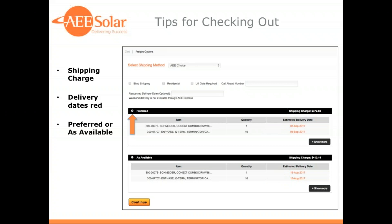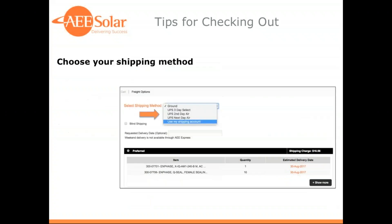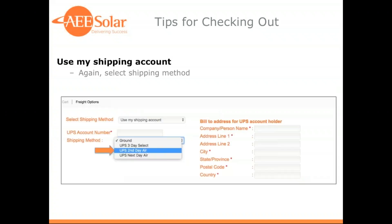You would choose either preferred or as available to move forward. The next window allows you to choose your level of service. For small parcel, this could include ground, three-day, two-day, and next-day air. You also have the ability to use your own UPS or Conway account. If using your own account, you would enter your account number, populate your billing address on file with that carrier, and choose your shipping method. Important to note: this is your billing address, not the ship-to address.